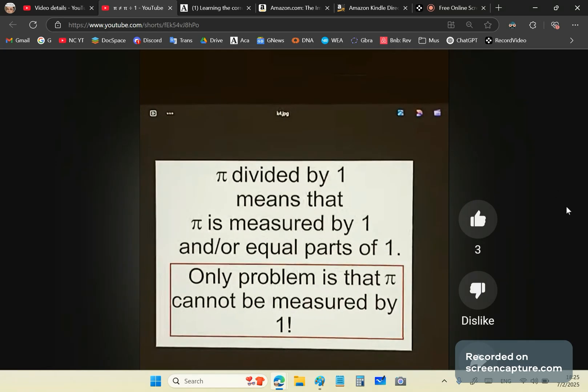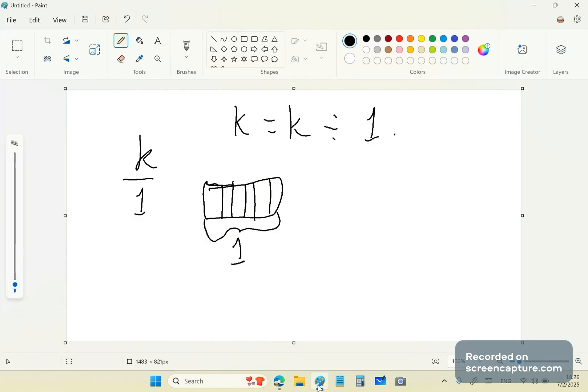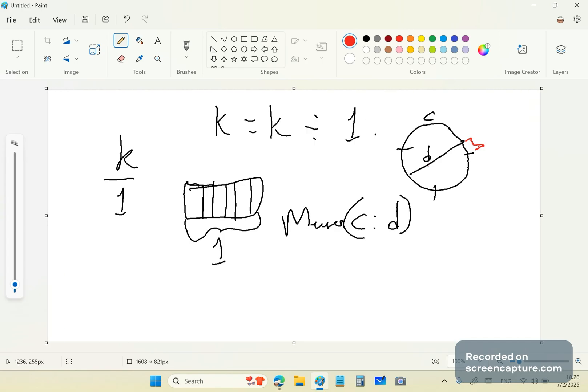Now we get to the crux of the problem. Pi divided by one means that pi is measured by one and or equal parts of one. What I just explained to you. So that means that if you have a circle like that and a diameter, then call that c and that d. This means that you're trying to take the measure of this ratio. Now you'll find that if you treat d as a unit, you can get approximately three and there's this little troublesome piece here.